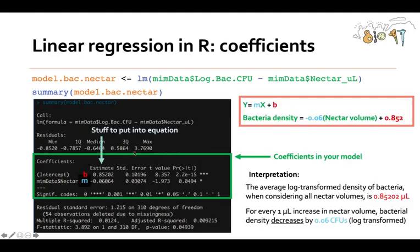The next thing is coefficients. So this is the most important part, because this column here shows the stuff you put in your equation. So again, for a linear equation, the formula is y equals mx plus b. So this intercept is the intercept, or the plus b, so you could write our equation as bacterial density. That's the y-axis, right? Because remember, lm is y tilde x. So y, bacteria density, equals 0.06. From here, here's the m, times the nectar volume, that's our x, plus our intercept, 0.852. y equals mx plus b.